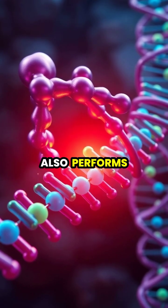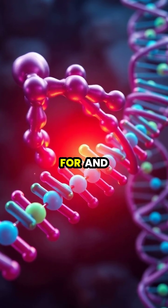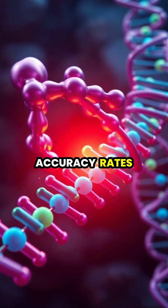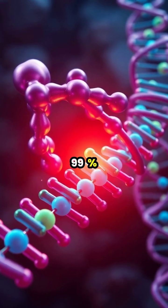Throughout replication, DNA polymerase also performs proofreading, checking for and correcting errors to ensure accuracy rates of 99.99% or higher.